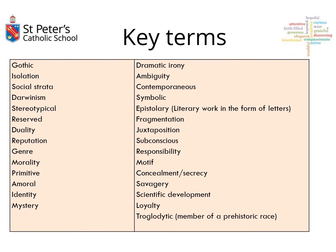Here are key terms I'd encourage you to become familiar with. You don't have to mention every single one in a response, but these are a really good starting point for words I'd expect to see in a top-mark essay. They're linked to themes and also to the writing style of this novel — things like Darwinism, symbolism, juxtaposition, and the subconscious. Feel free to pause this page or take a screenshot.